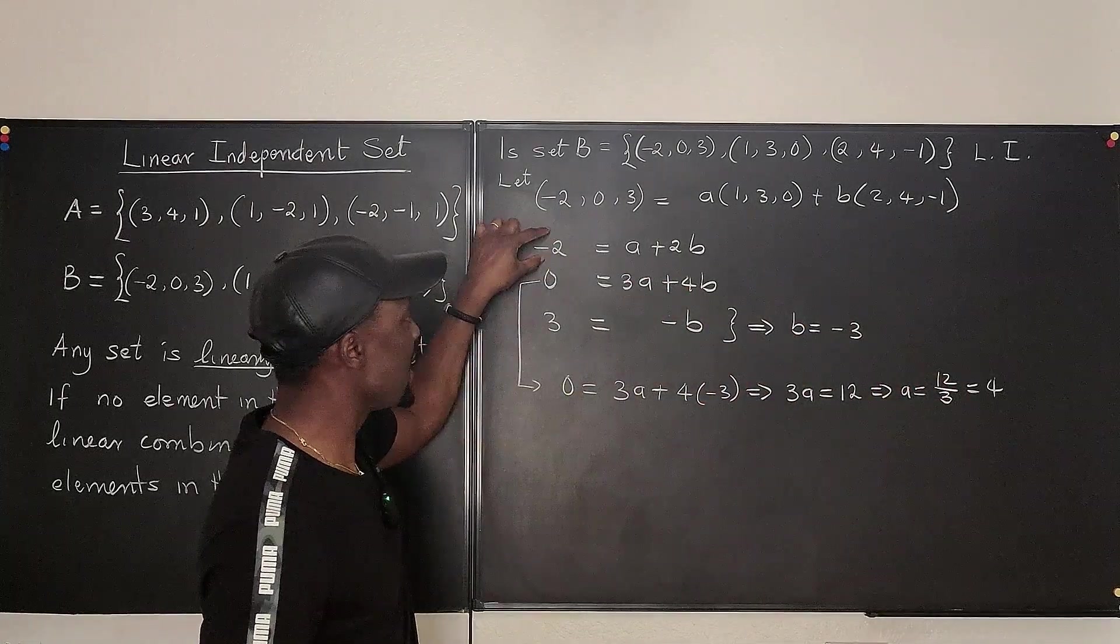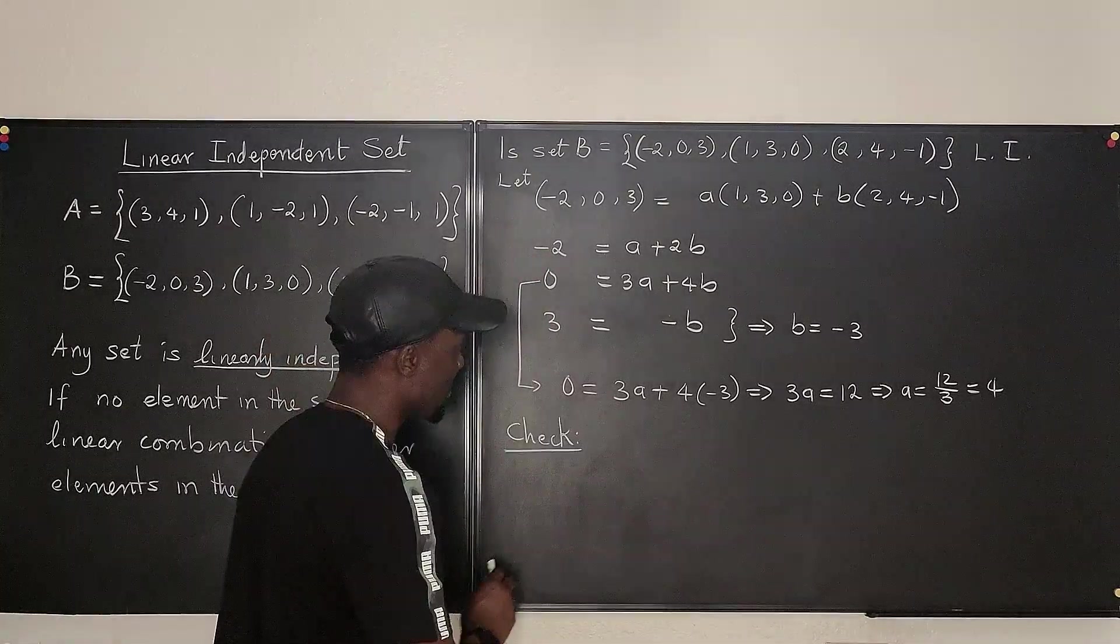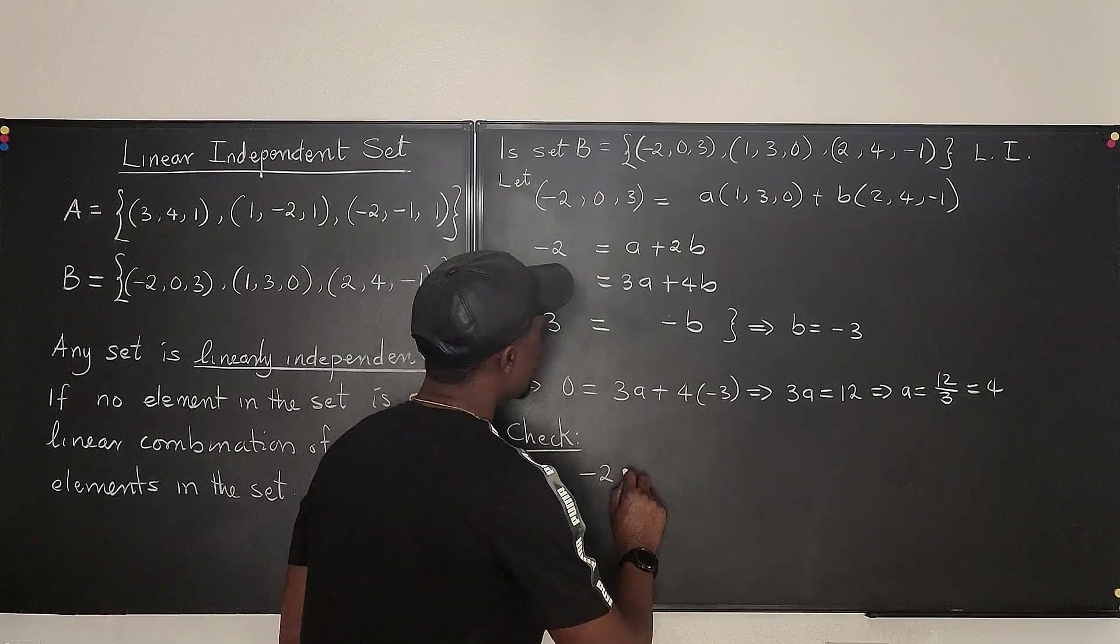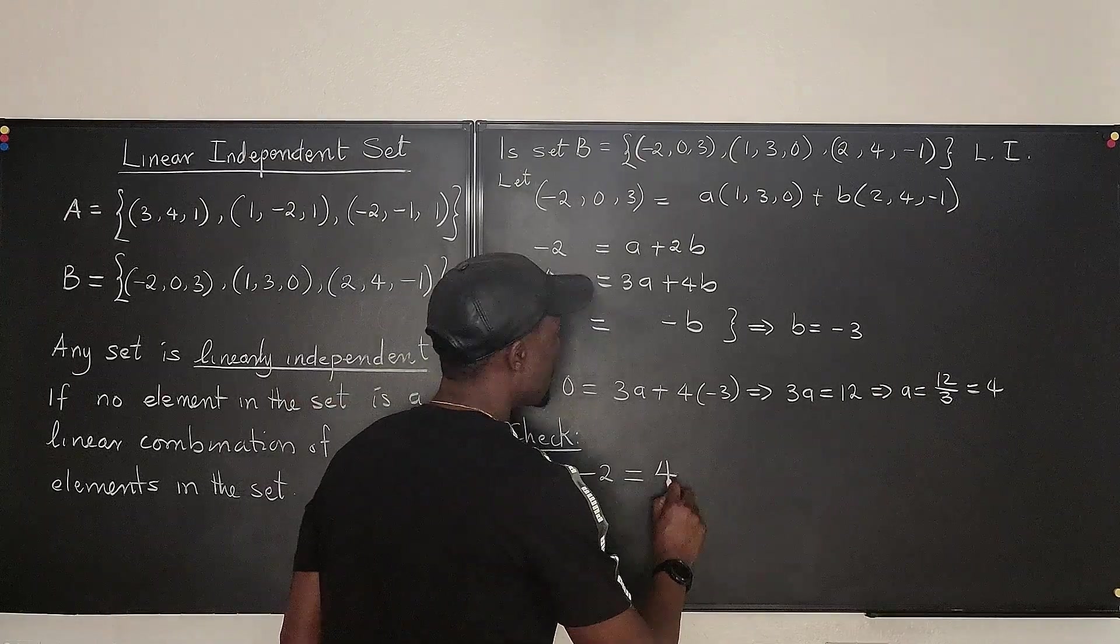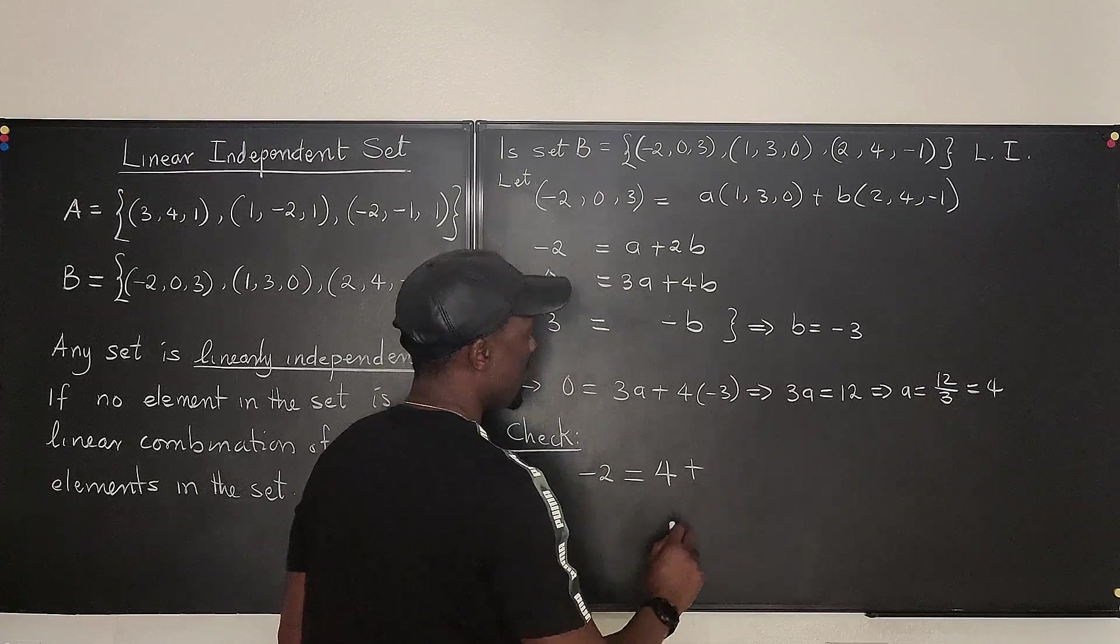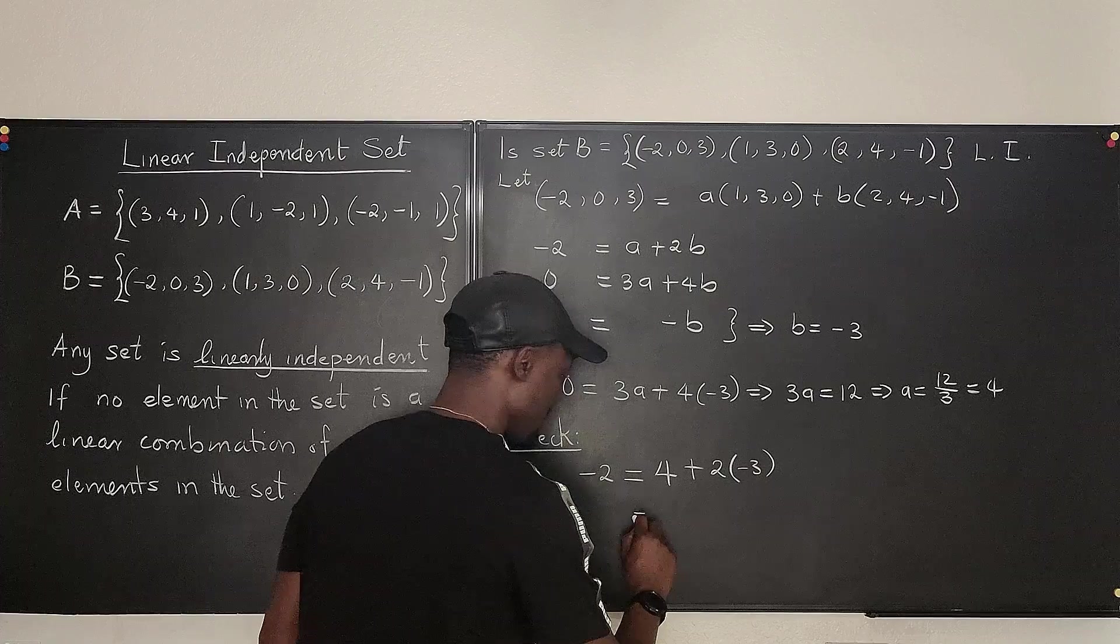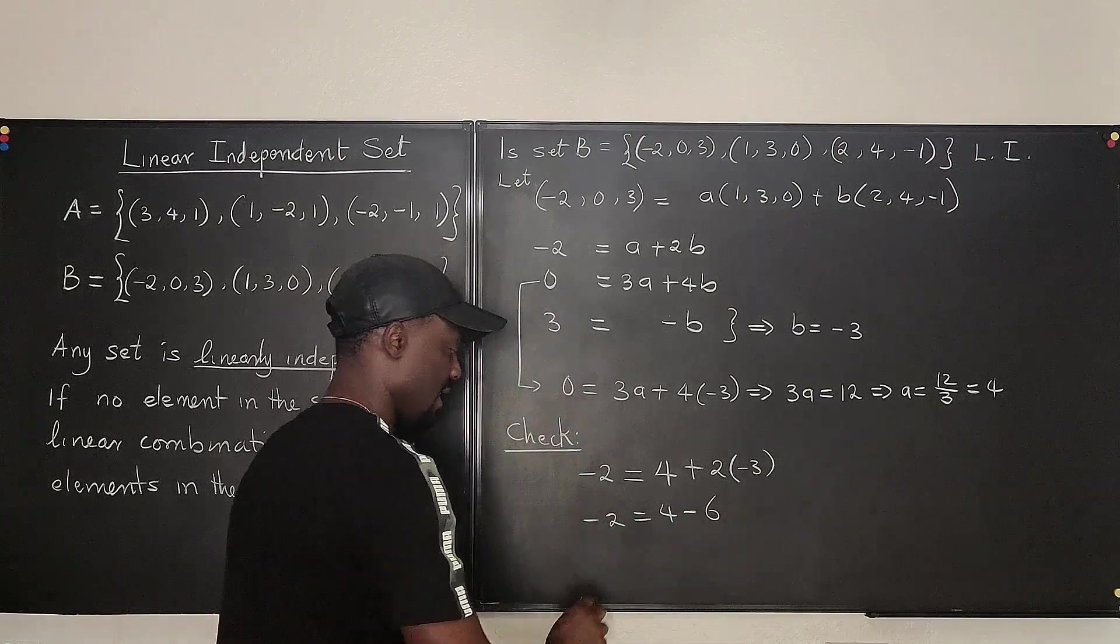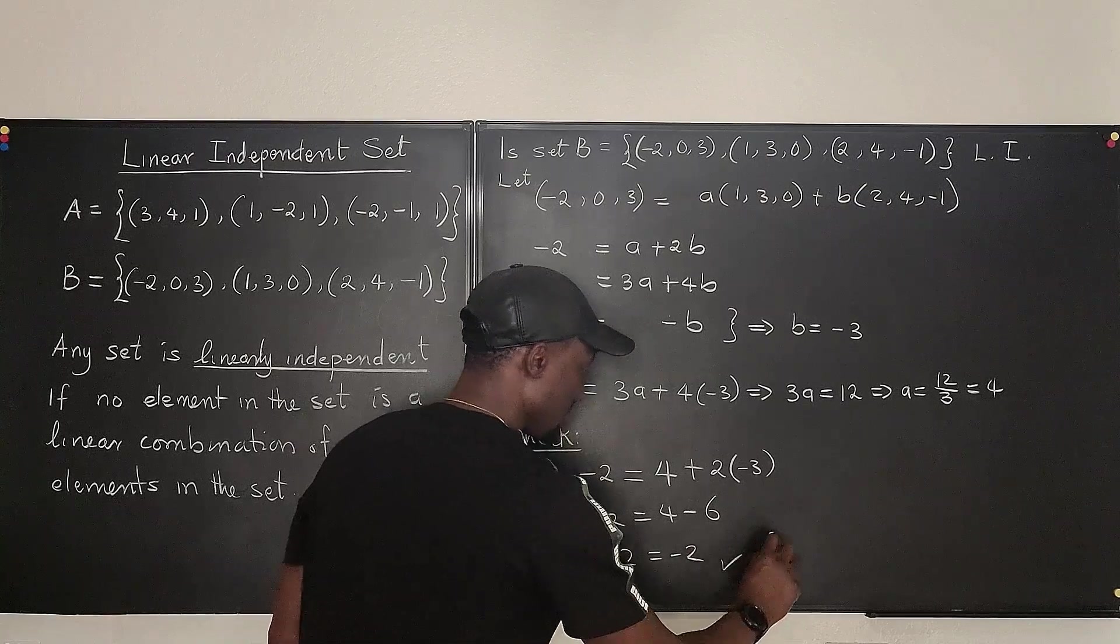We take these two, go plug it into the equation we haven't used and see if there's some kind of consistency. We're going to say minus 2 is equal to A. What is A? A is 4 plus 2 times B. What is B? B is negative 3. So we have negative 2 equals 4 minus 6. Looks like that's correct. Minus 2 equals minus 2. And this is consistent. And this is consistent.